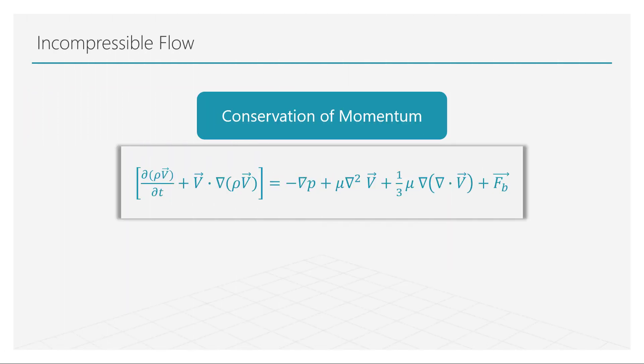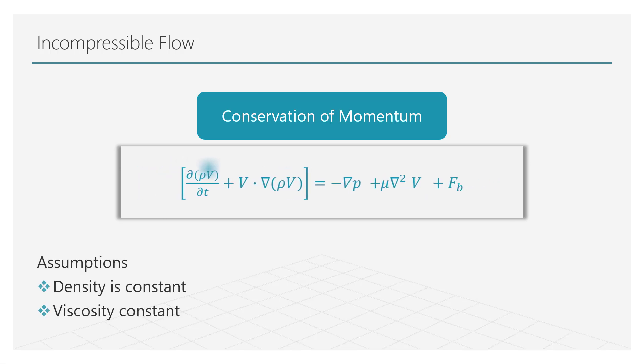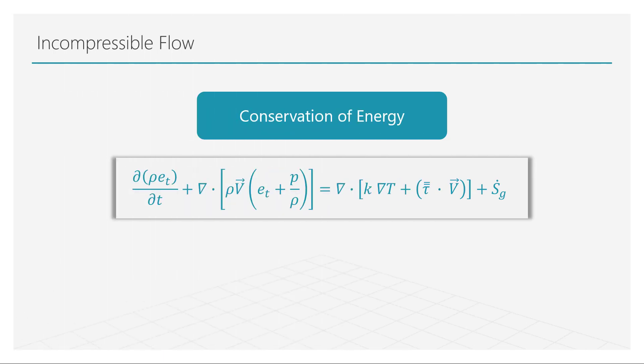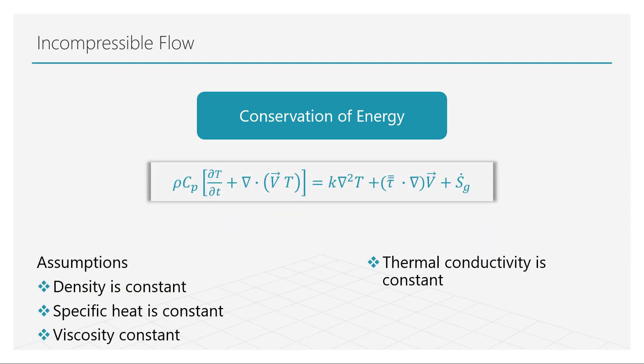Similarly, the momentum conservation equations can be reduced to the form shown here. If we further assume that the specific heat and thermal conductivity are also constants, the energy equation reduces to the form shown here. The incompressible equations are sufficient to fully describe most flows involving liquids such as water, and gaseous flows at very low speeds.